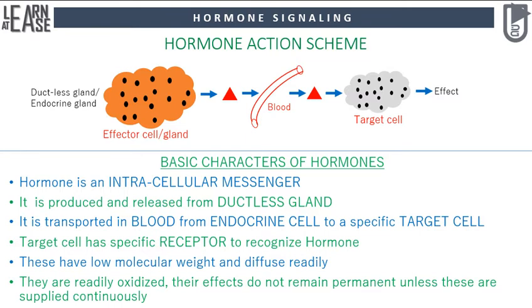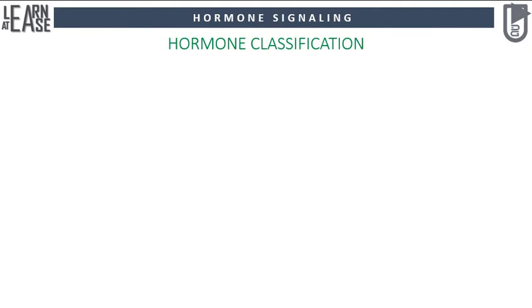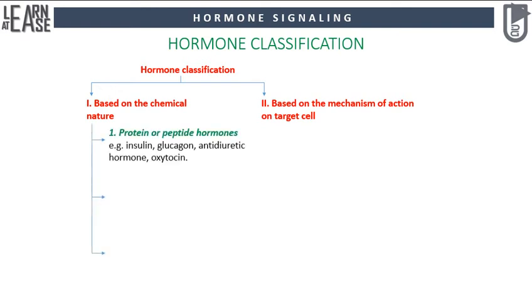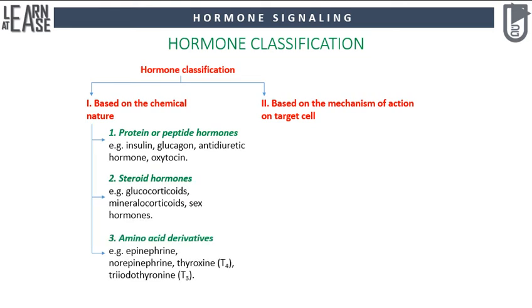Now let us see the classification of hormones. These molecules are grouped based on: 1. Chemical nature, and 2. Their mechanism of action on the target cell. Chemically, hormones are further grouped as: 1. Protein or peptide hormones, 2. Steroid hormones, and 3. Amino acid derivatives.